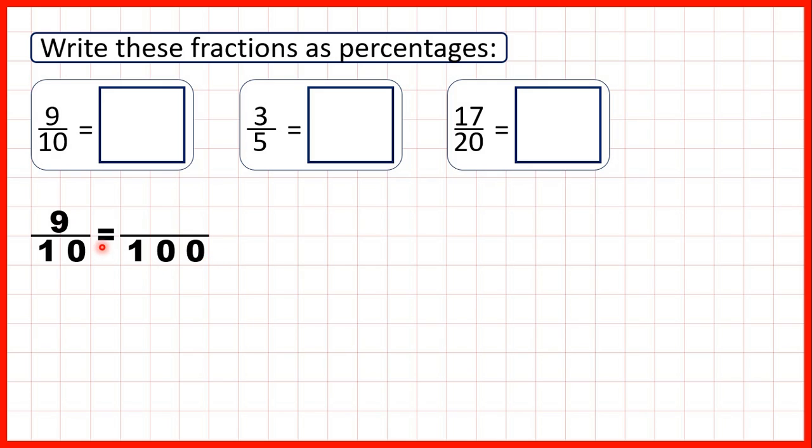To find equivalent fractions, we use multiplication. Ten times ten is a hundred, and what we do to the denominator, we need to do to the numerator as well, and nine times ten is ninety. So because nine-tenths is equivalent to ninety-hundredths, that's the same as ninety percent.